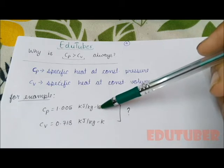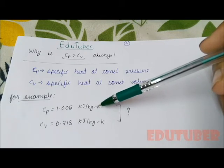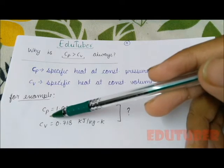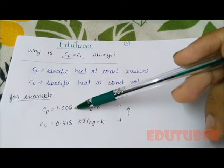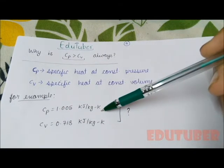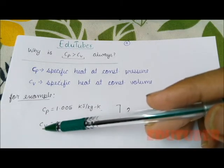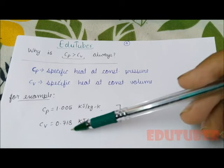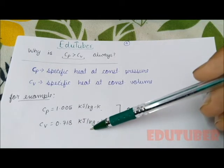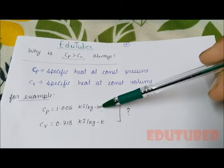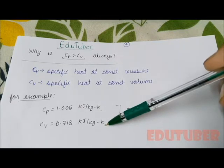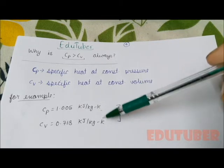Air is a gas. Specific heat of air at constant pressure is 1.005 kJ/kg·K, while the specific heat of air at constant volume is 0.718 kJ/kg·K. Here you can see CP is greater than CV. So why is it so?